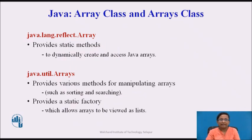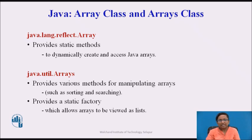What are arrays in Java? Arrays are objects which store multiple variables of the same type. They can hold primitive types as well as object references. Since arrays are objects, they are created during runtime, and the array length is fixed. The Array class in the java.lang.reflect package is part of Java reflection, and provides static methods to dynamically create and access Java arrays. The Arrays class provides various methods for manipulating arrays such as sorting and searching, and provides a static factory which allows arrays to be viewed as a list — which is why it is part of the Java Collection Framework.